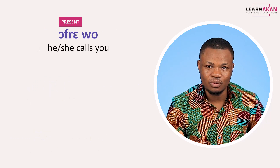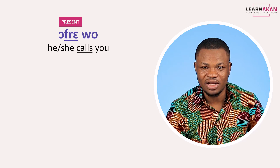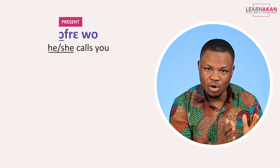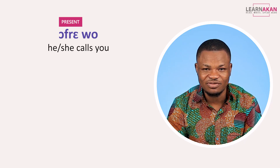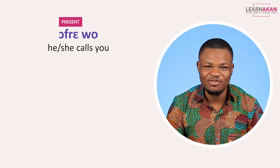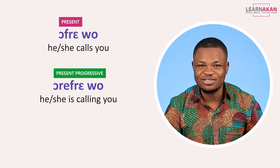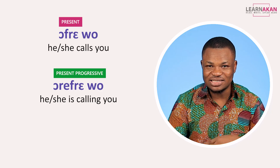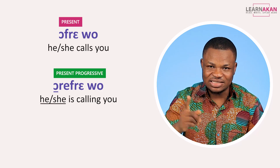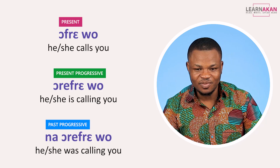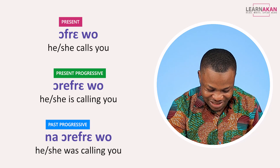The next example is 'o frel' — 'he or she calls you' — where the verb is 'fre', to call, and the subject is 'o', he or she. To put this in the present progressive, we attach 're' in front of the verb 'fre', so we get 'o a frel' — 'he or she is calling you'. To situate this in the past, we introduce 'na' before the subject, so we get 'na o a frel'.